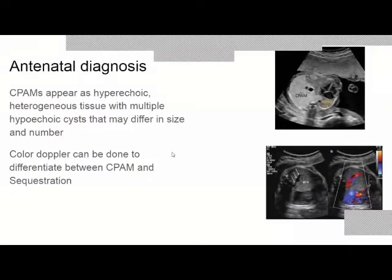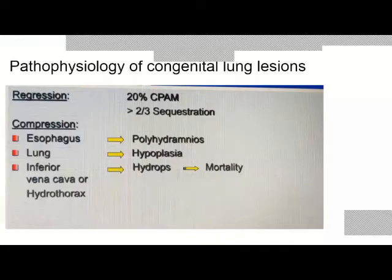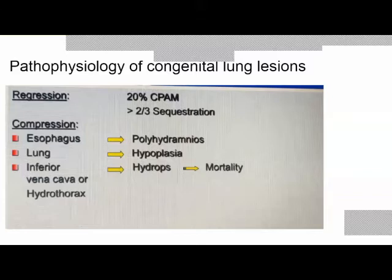On antenatal ultrasound, CPAMs appear as hyperechoic heterogeneous tissue with multiple hyperechoic cysts varying in size and number. There can be confusion between CPAM and sequestration antenatally; color Doppler can differentiate them — sequestration shows an artery arising from the aorta. Regarding physiology: about 20% of congenital lung lesions undergo regression, but some cause compression of the esophagus leading to polyhydramnios, compression of the lung causing pulmonary hypoplasia, or compression of the inferior vena cava causing hydrops and mortality.